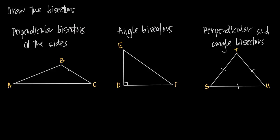When we say perpendicular bisector to a side of a triangle, we're looking to draw the line that divides the side into two sections. 'Perpendicular' means at a 90-degree angle. So if we want to draw the perpendicular bisector to side AB of triangle ABC, we find the midpoint — the point halfway between A and B — and draw a line through that point at 90 degrees to AB. That dotted line is the perpendicular bisector to side AB.